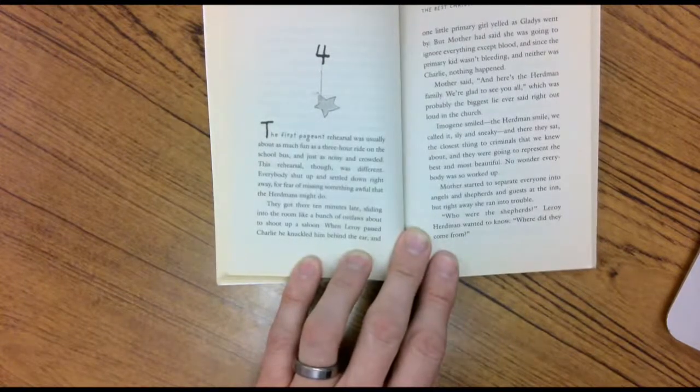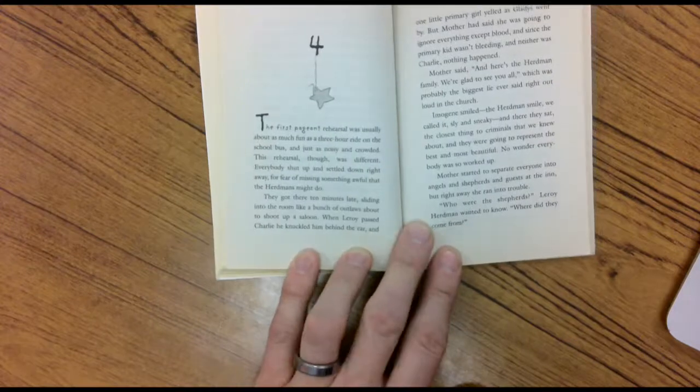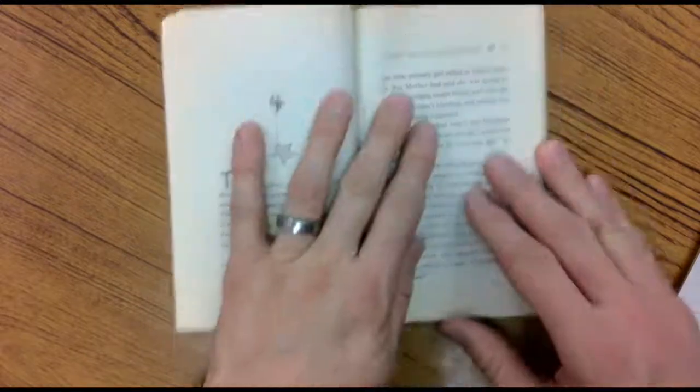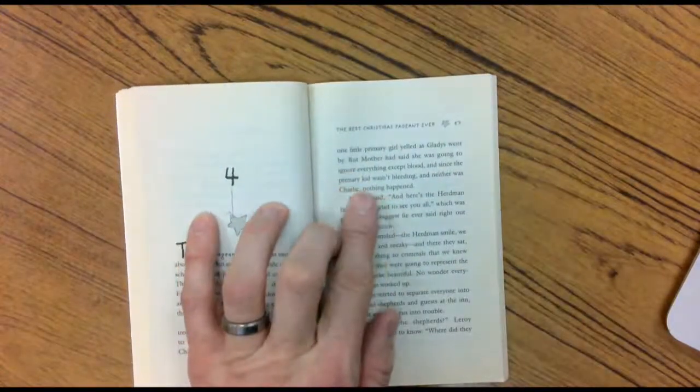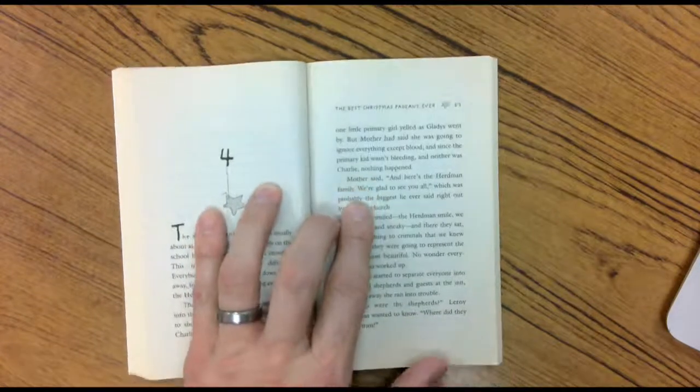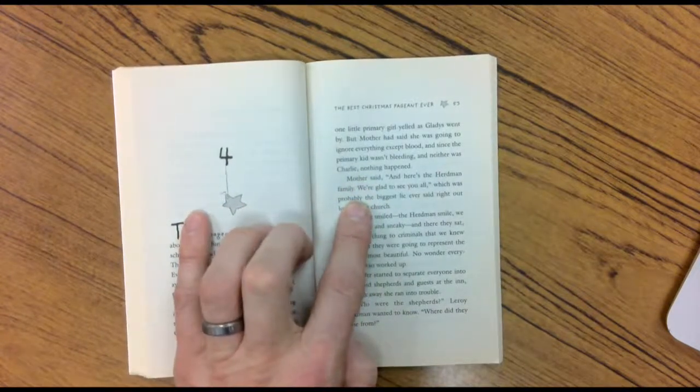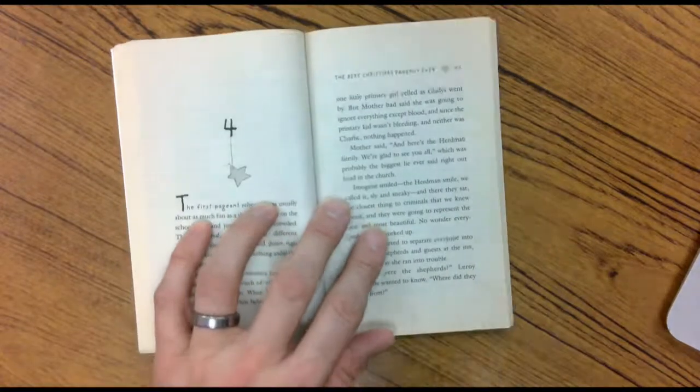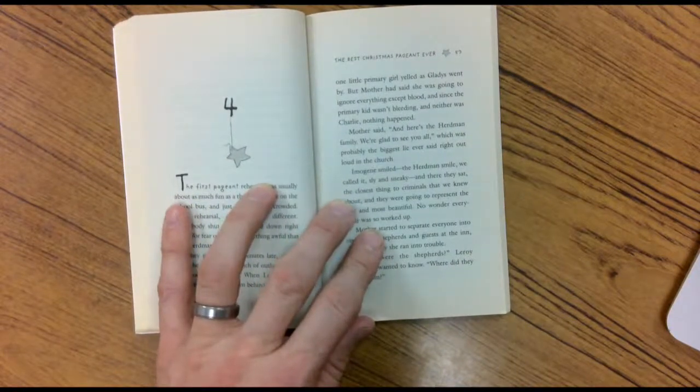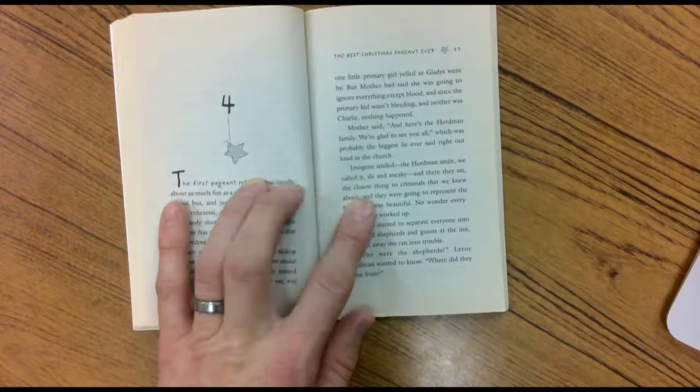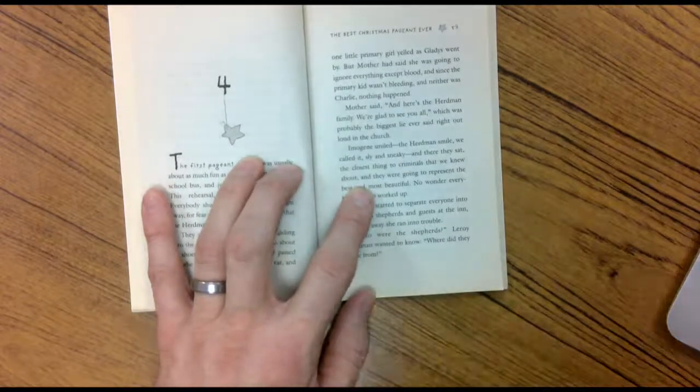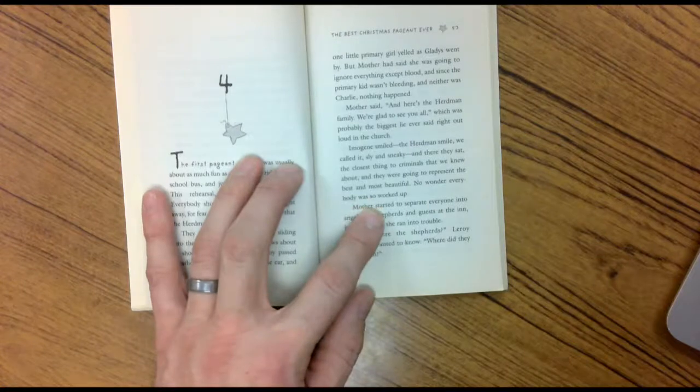Now that's what you would call a bar and restaurant in the old days out west, the saloon. Think about like Buffalo Wild Wings. When Leroy passed Charlie, he knuckled him behind the ear and one little primary girl yelled when Gladys went by. But mother had said that she was going to ignore everything except blood. And since the primary kid wasn't bleeding and neither was Charlie, nothing happened. Mother said, and here's the Herbman family. We're glad to see you, which was probably the biggest lie ever said right out loud in the church. Imogene smiled. We call it sly and sneaky. And there they sat, the closest thing to criminals that we knew about. And they were going to represent the best and most beautiful. No wonder everybody was so worked up.